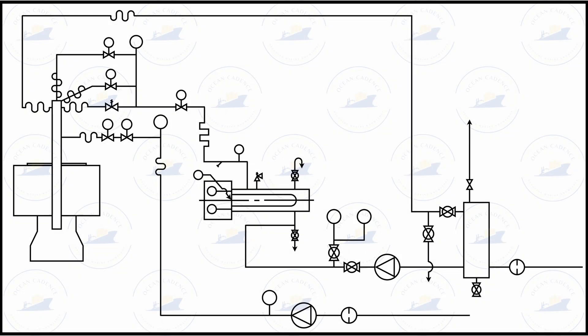In today's time a typical marine boiler has a burner system that consists of two different parts. First is the ignition burner and second is the main burner. The ignition burner can also be named the pilot burner. The pilot burner is provided the job of initiating the combustion in the boiler.